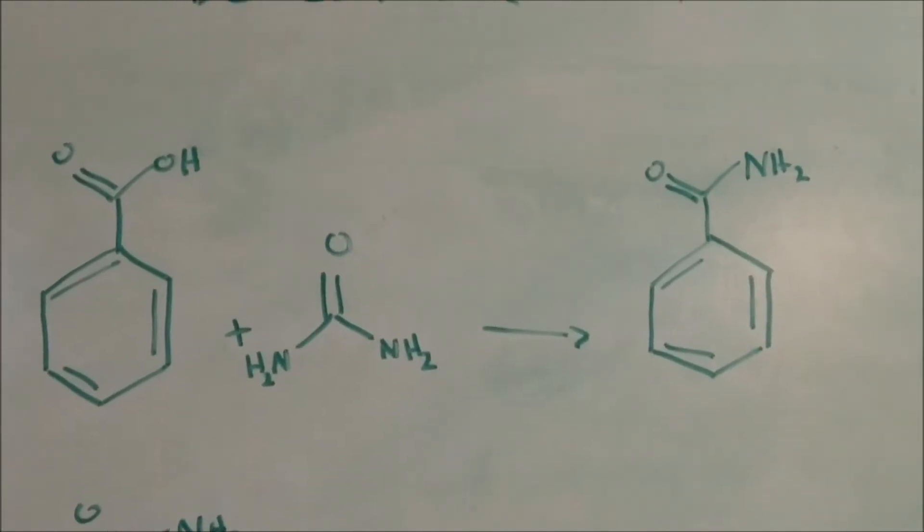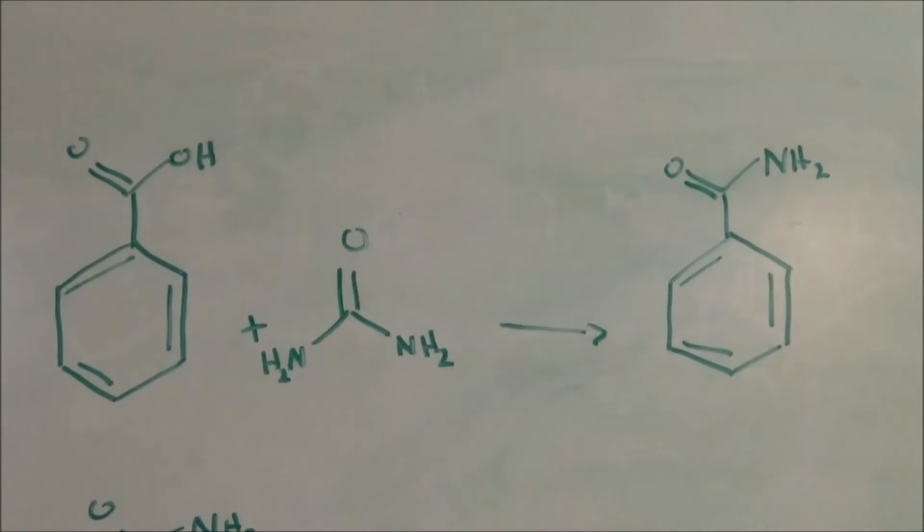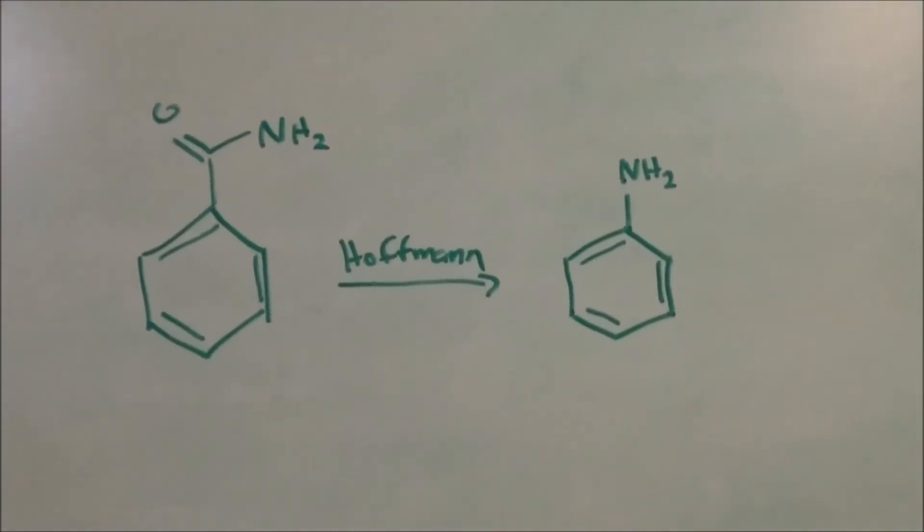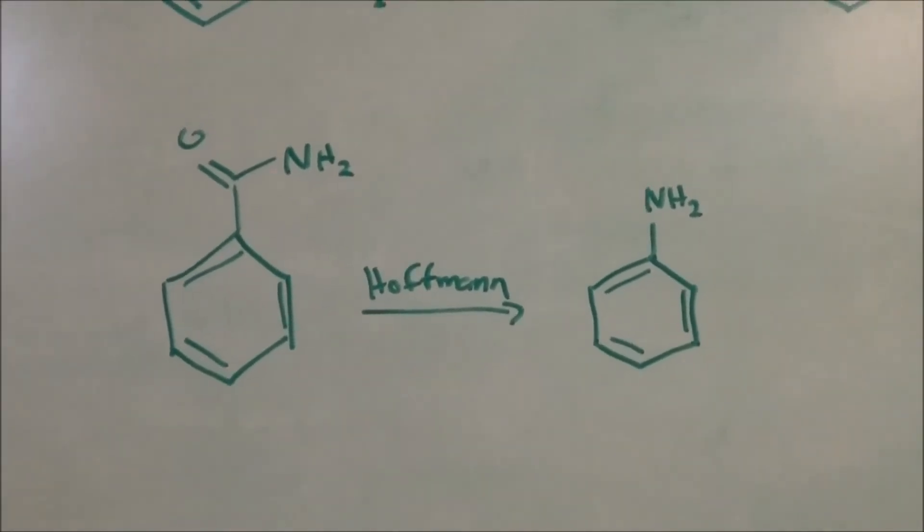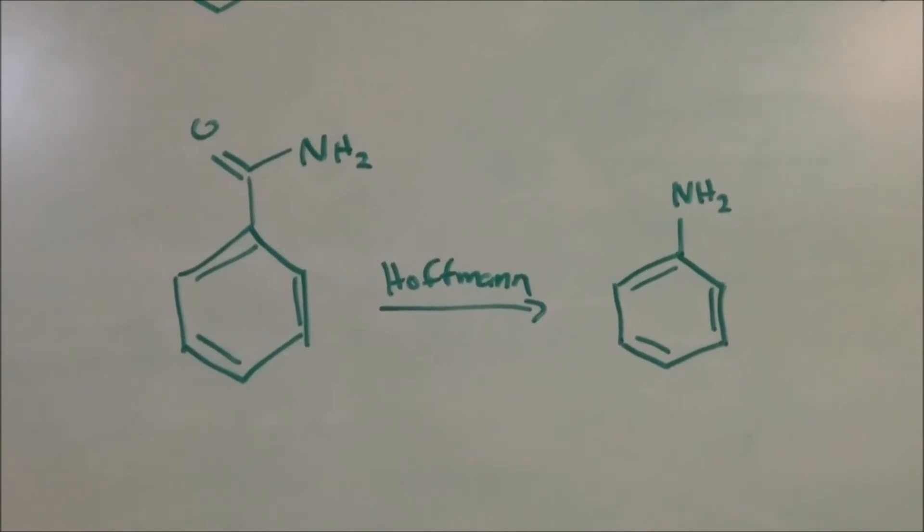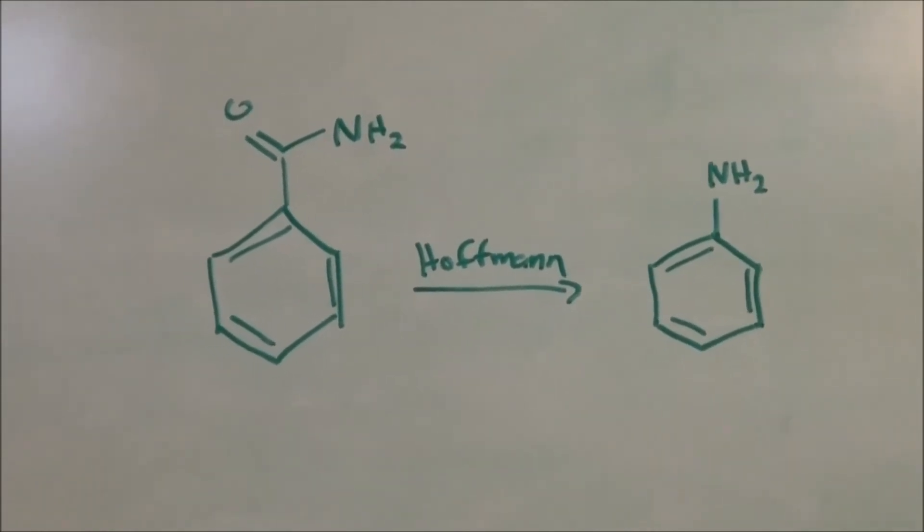Benzamide doesn't have a large number of uses, but I intend to use it to make aniline through the Hofmann rearrangement. This opens up a pathway to aniline without having to go through nitrobenzene.